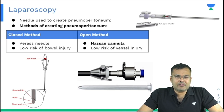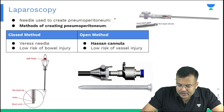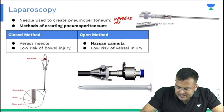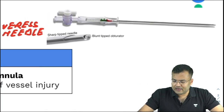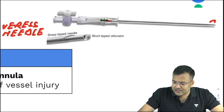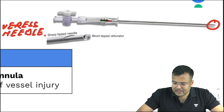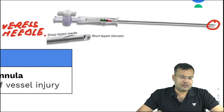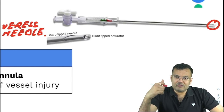The name of needle used to create pneumoperitoneum is the Veress needle. You can see here how this Veress needle looks like. It has a sharp-tipped needle and there is a blunt-tipped obturator. This blunt-tipped obturator is going to decrease the risk of bowel injury.